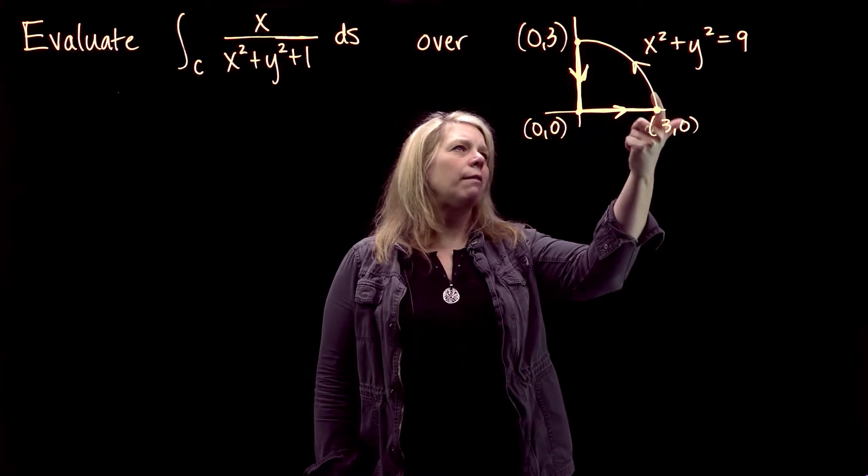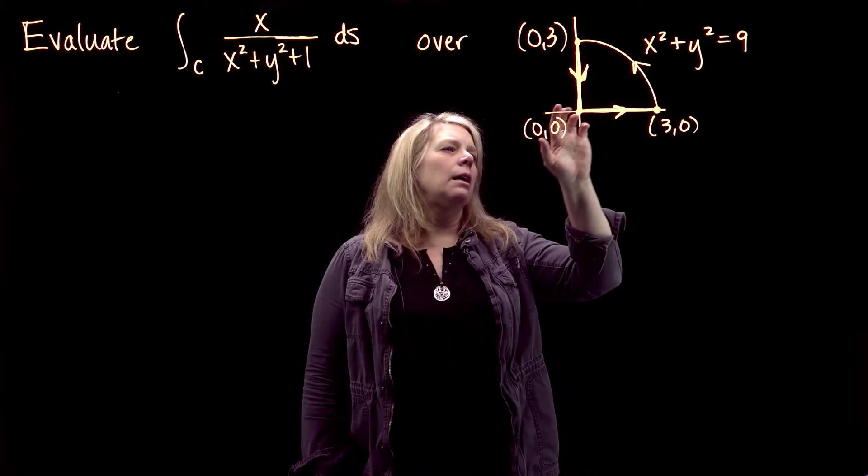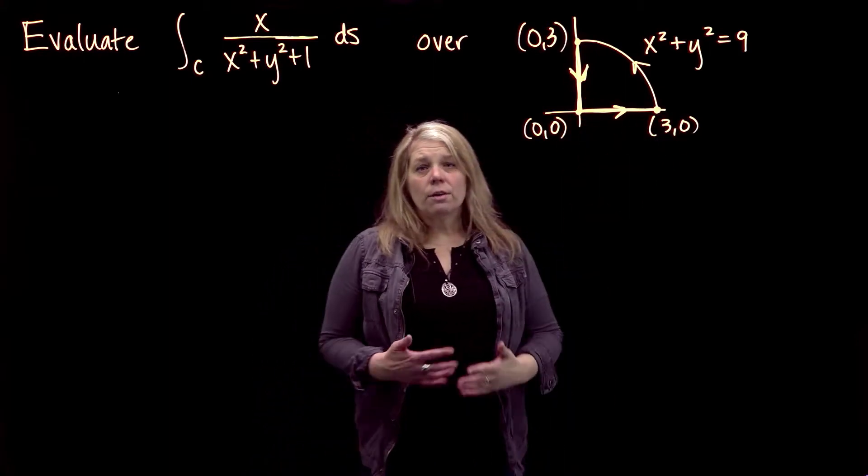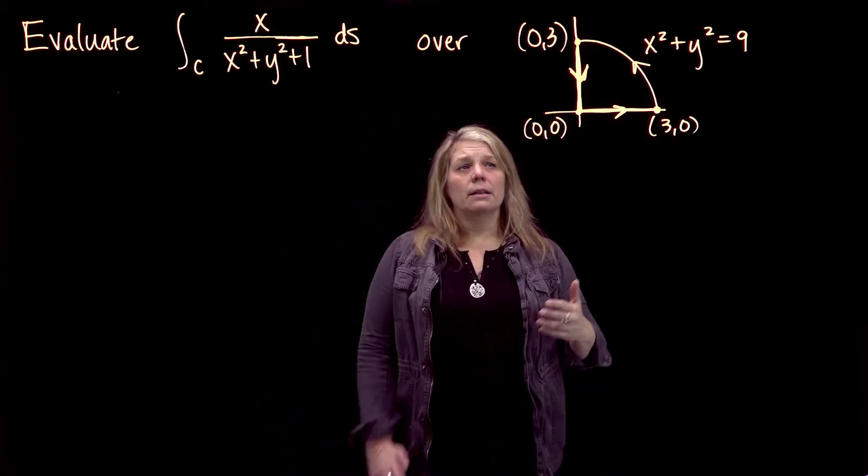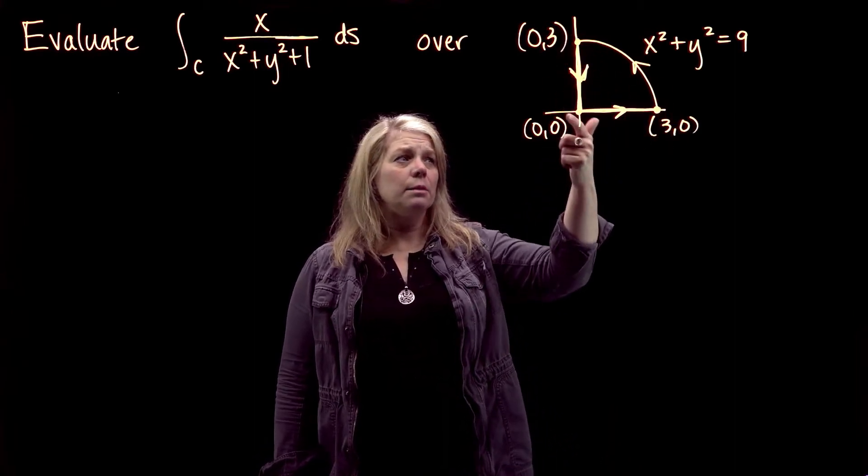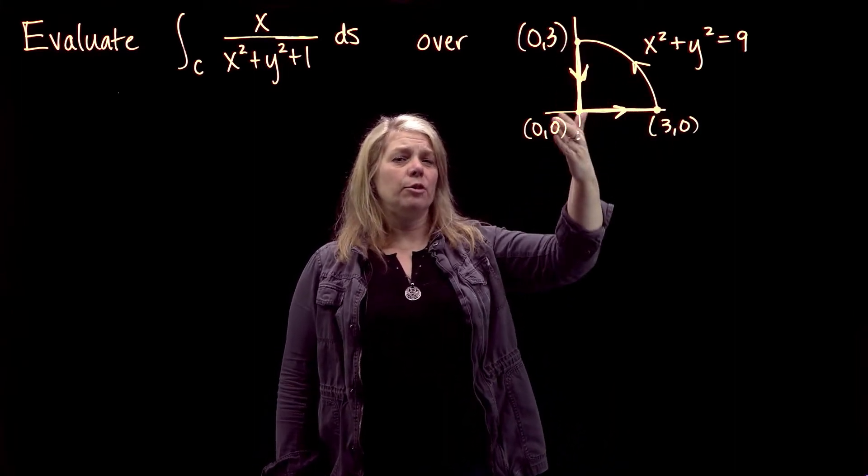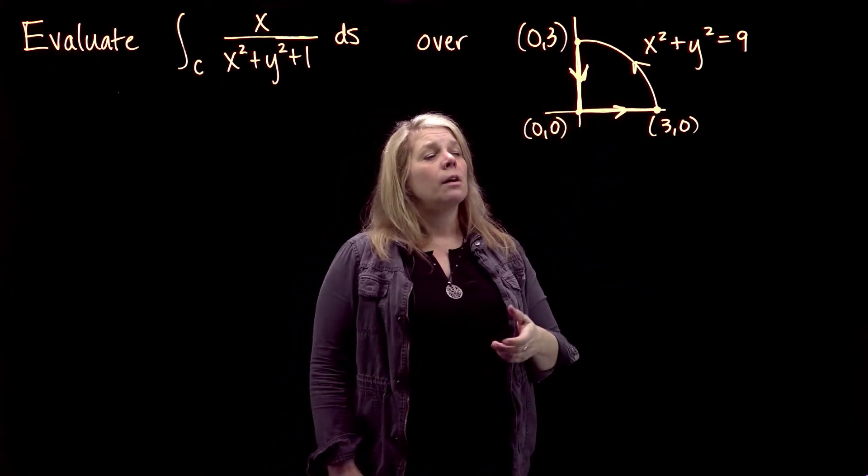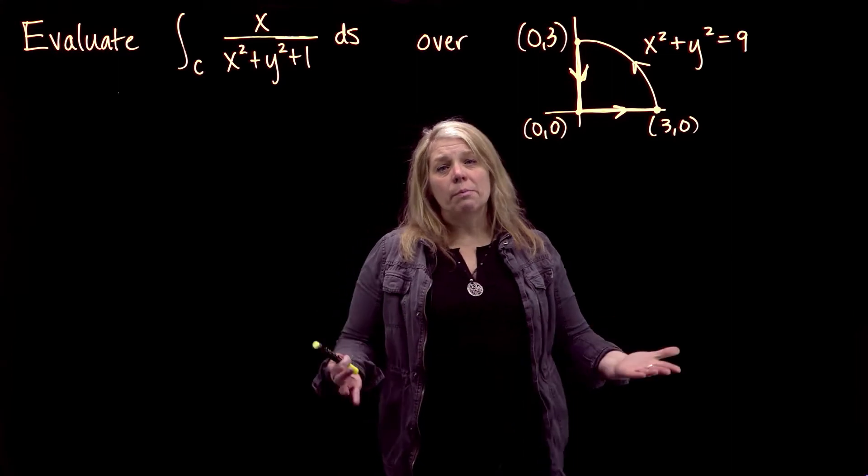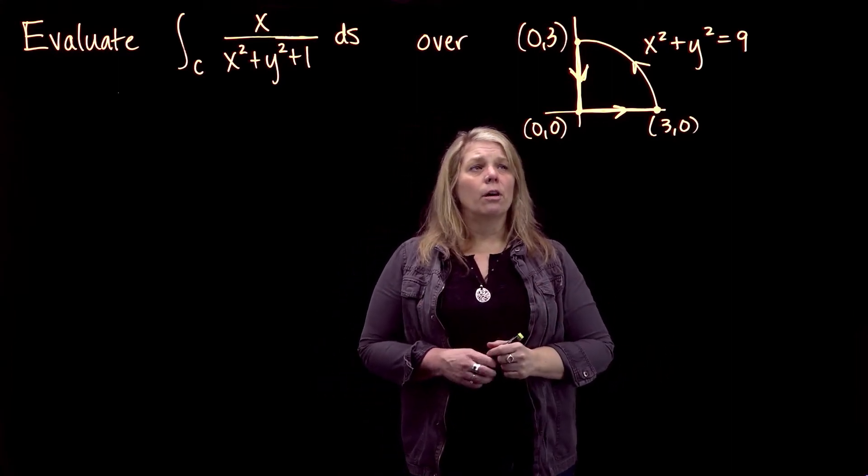Here is our curve that we're integrating over. It's made up of three pieces: a line segment, an arc of a circle, and another line segment. The first thing you would notice is that this curve is not smooth. I can't write a smooth parametrization of this entire curve, but it is piecewise smooth. So I can break this into three pieces and evaluate the line integral over each piece.